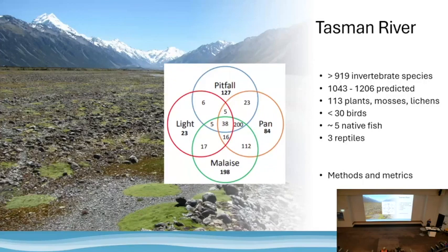The Tasman study also gave us a hint about how we could set up a standard monitoring method for invertebrates in other rivers. That particular study had five different collection types, plus hand collection, and you can see the numbers of different species detected using each type. For the studies I'm going to talk about today, we slimmed that down to just two types: malaise traps and pitfall traps. That gets you the bulk of the biodiversity and takes some of the complexity out of the trapping process.